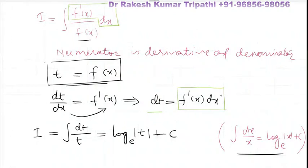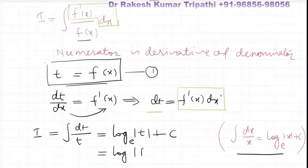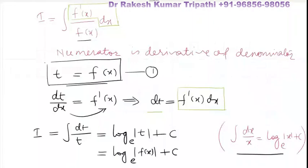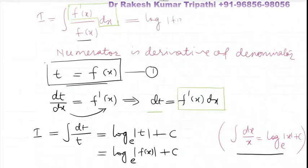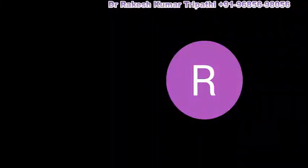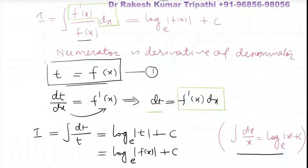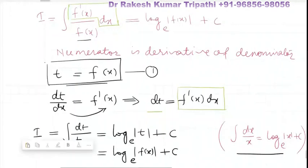So log of — now we can see the value of t. The value of t is f of x, so the integral will be log of mod of f of x, base e, plus c. This can be used as a formula — it is like a trick where the denominator should be substituted as t.